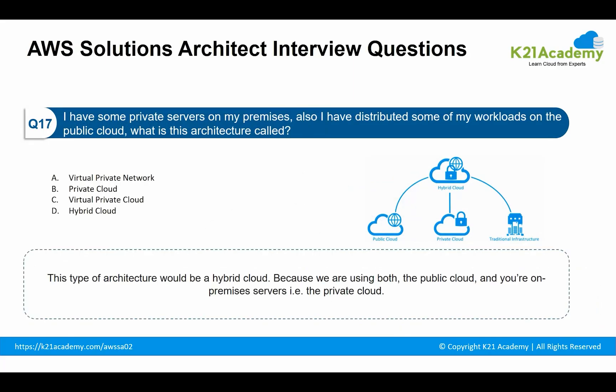Now coming to a more advanced question: I have some private servers on my premises and I have also distributed some of my workload on the public cloud. What is this architecture called? This type of architecture is called hybrid cloud, because we are using both the public cloud and on-premise servers, which is the private cloud. This is stabilized by including the public cloud servers in a Virtual Private Cloud and connecting it with your on-premise servers using a VPN, which is a virtual private network.